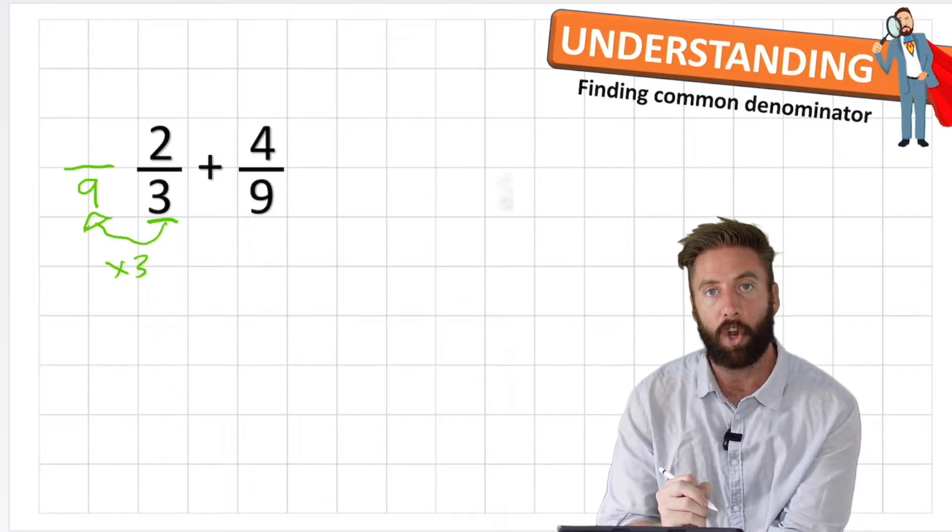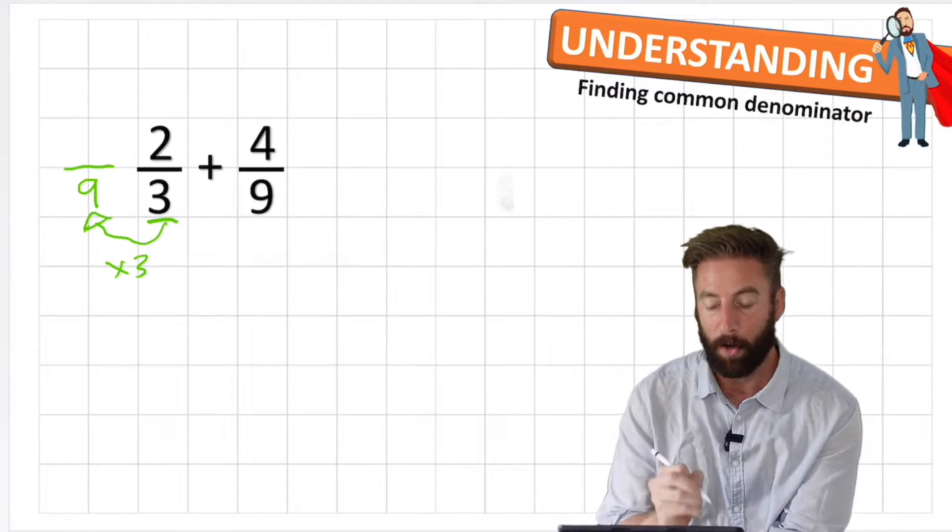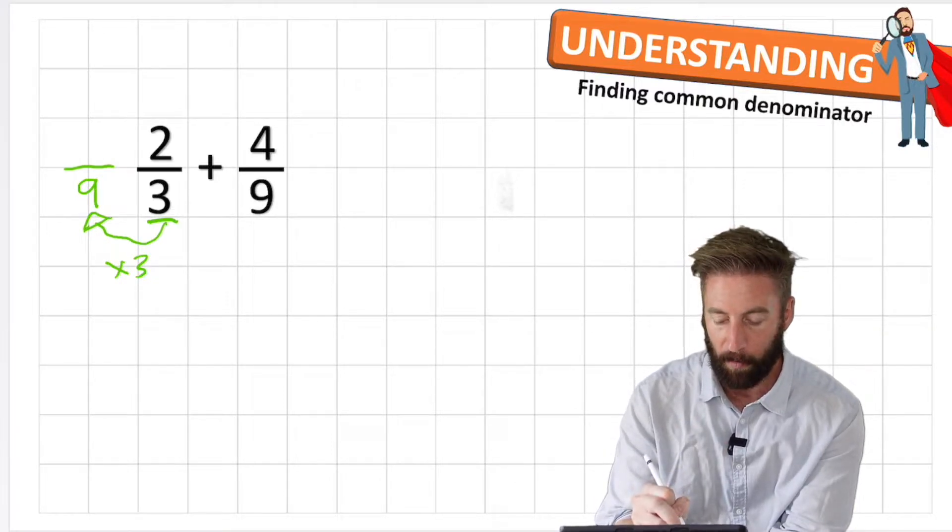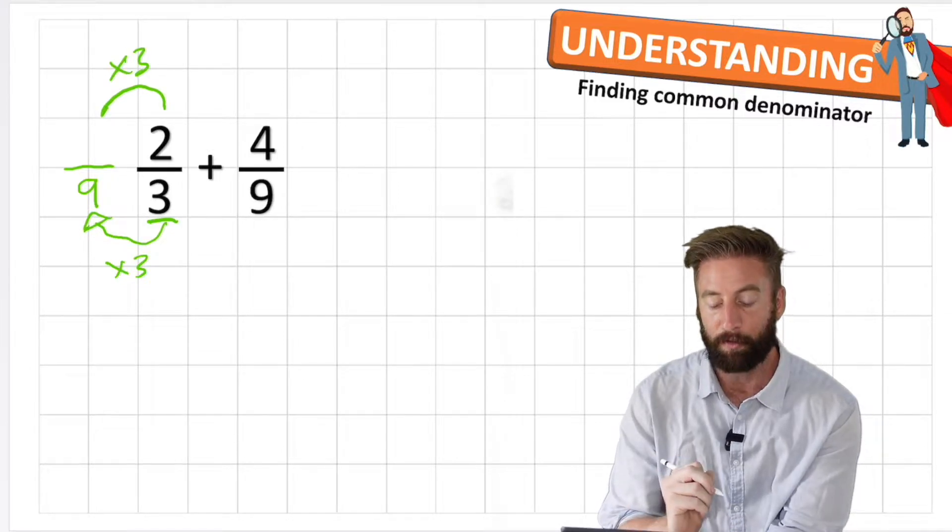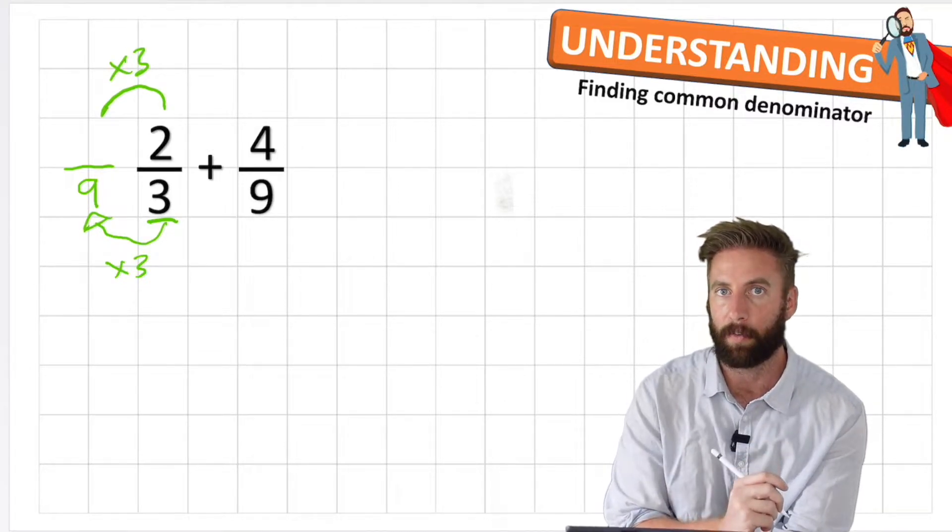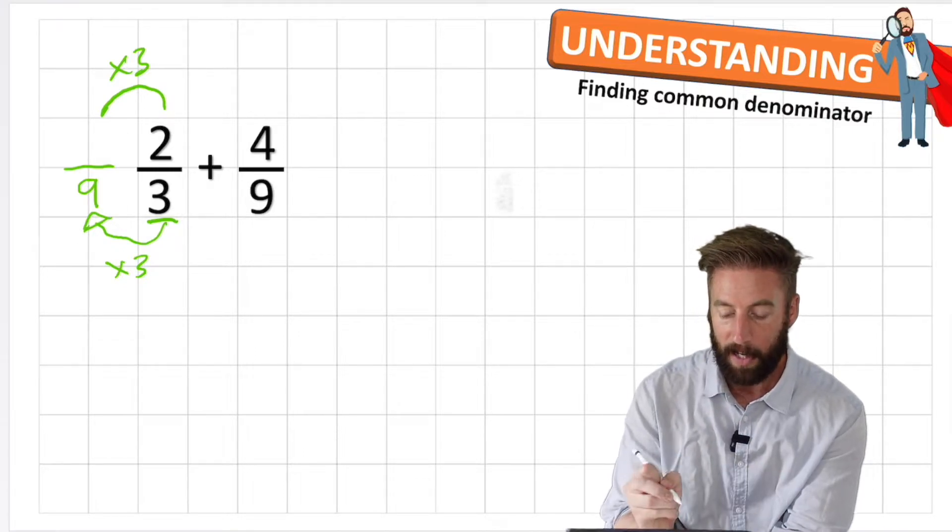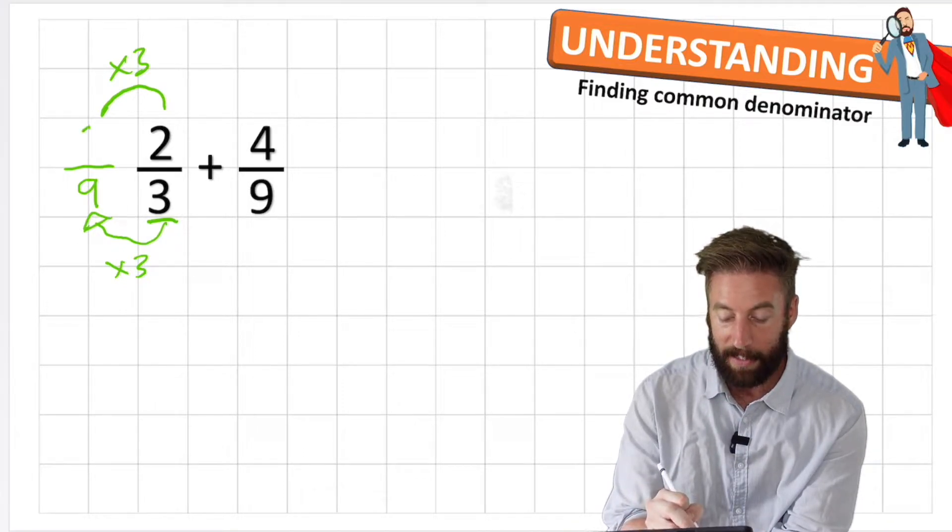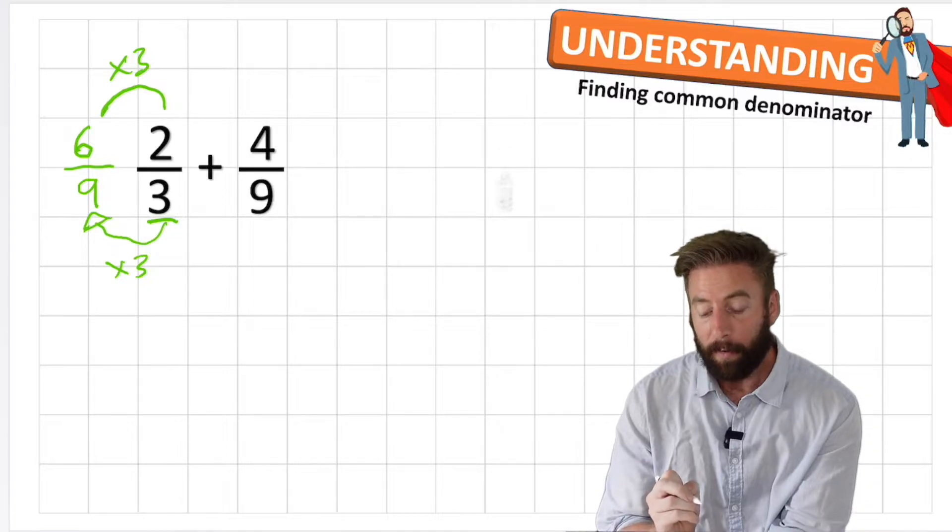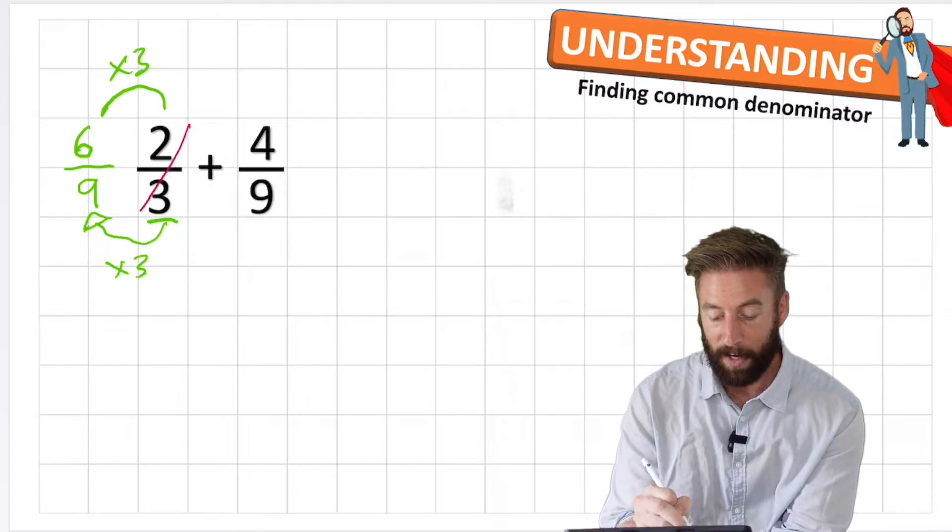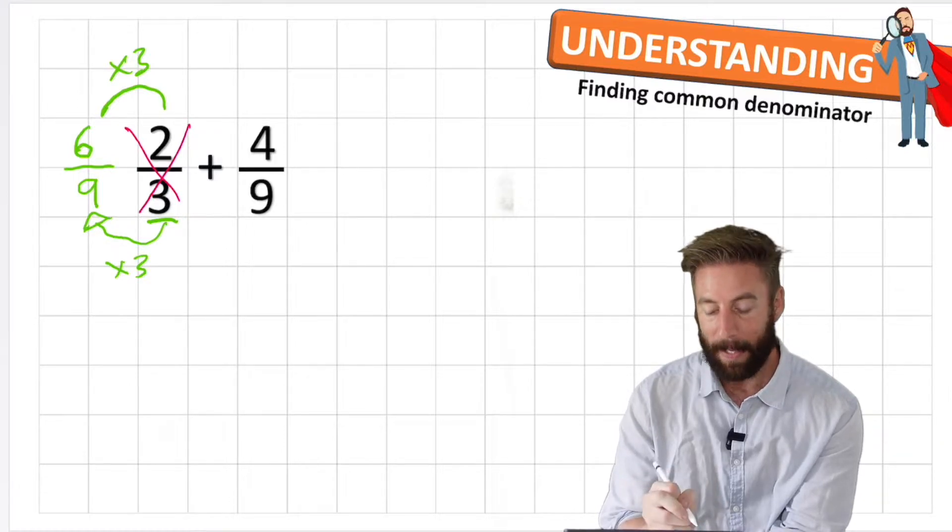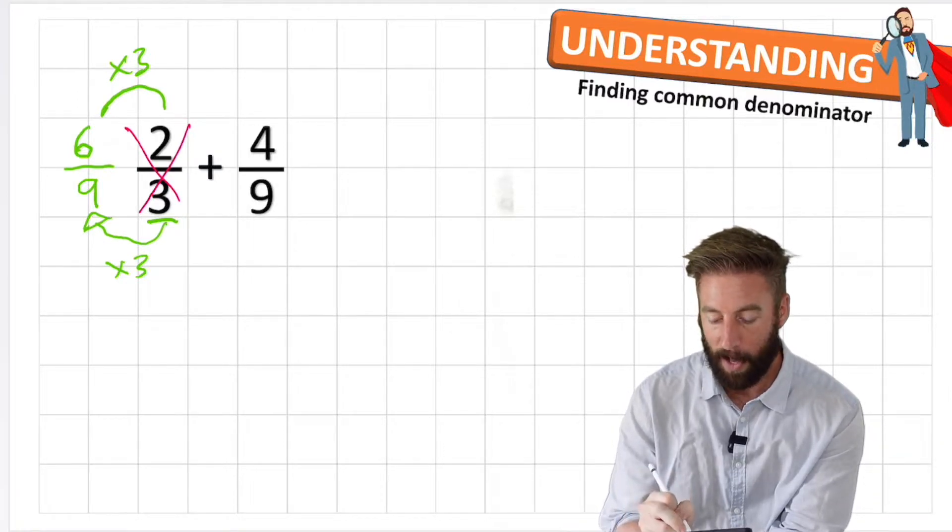So how can I turn my 3 into a 9? Well I'm going to have to times by 3, which turns my denominator into a 9. Good, that's a good step. But now if I've done that to my denominator, what do I need to do to my numerator? That's right, well done. We need to times that by 3 also. If you don't fully understand why, go back to the equivalent fractions video. So 2 times 3 is 6. So my equivalent fraction is 6/9. Now I can simply add 6/9 to 4/9.